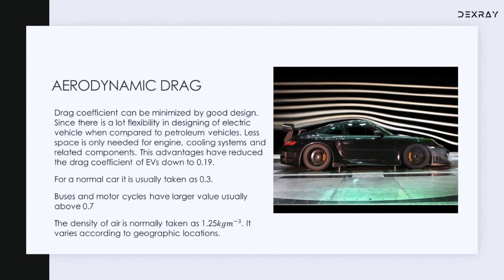The drag coefficient can be minimized through good design. In the case of electric vehicles, we have a lot of flexibility compared to petroleum vehicles, since there is no requirement for large space for an engine and cooling systems — we can optimize the design more effectively for reducing aerodynamic drag at higher speeds. For a car, we normally take the drag coefficient value as 0.3 in problems and calculations; for buses, it can be above 0.7. In the case of electric vehicles, it is possible to minimize the coefficient of drag to 0.19 as per current research.